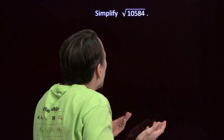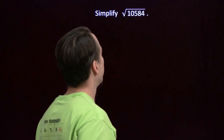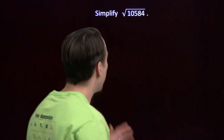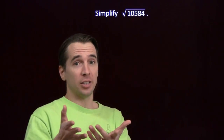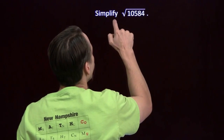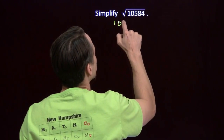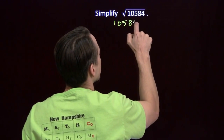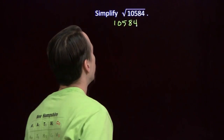Simplify the square root of 10,584. We know how to simplify square roots — we pull out perfect square factors, so let's go hunting for some perfect square factors.